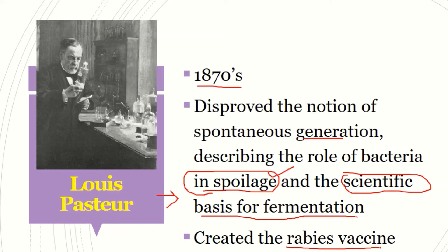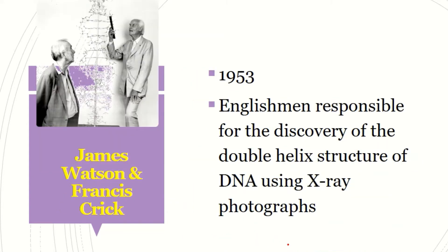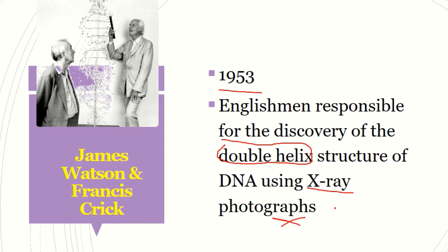He also was able to create a vaccine against rabies. Then James Watson and Francis Crick — we mentioned these two when talking about the structure of DNA. Around 1953, these two were able to discover that DNA is a double helical structure, as you can see from the diagram. They were able to determine this structure of DNA using X-ray photographs.